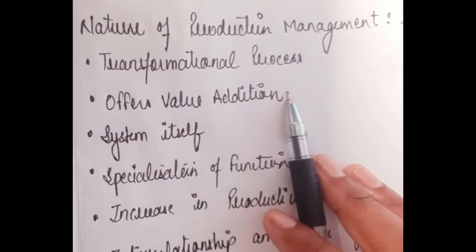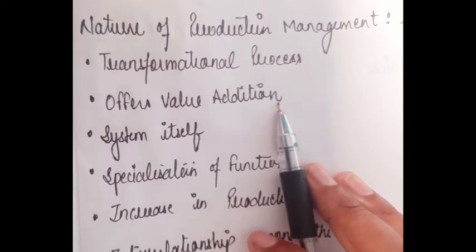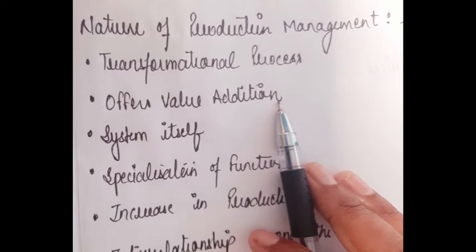Value addition means every succeeding level adds some value to the preceding ones. If you look at the production process, you will find that it is divided into stages. After one process ends and another starts, every single process adds some features and some value to your product. So at the end, you find a complete product. Every succeeding level adds some value to the preceding one.